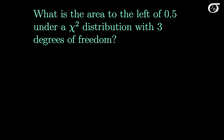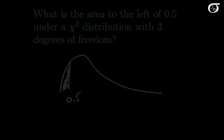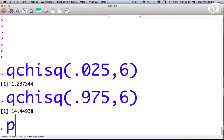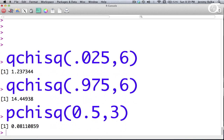What is the area to the left of 0.5 under a chi-square distribution with 3 degrees of freedom? I'll draw out my chi-square distribution with 3 degrees of freedom. I know that 0.5 is actually a small value under this distribution, and what we need to find is the area to the left of 0.5. I'll use the command pchisq with 0.5 and 3 degrees of freedom, and I get 0.0811.